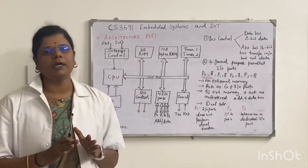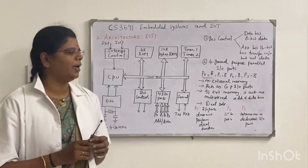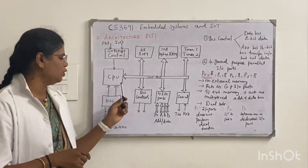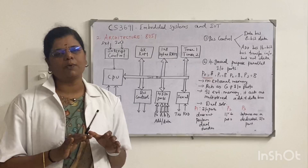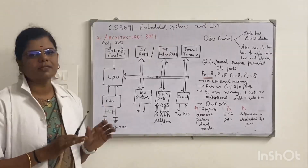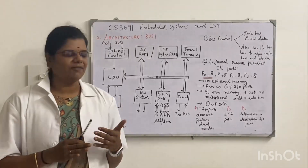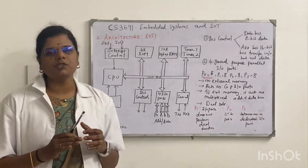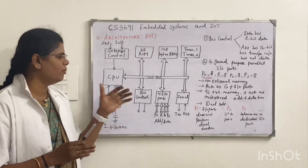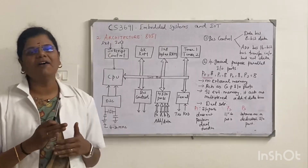The CPU, or central processing unit, is very important and plays a major role. We have the system bus, which is the internal bus. In the CPU we have the arithmetic logic unit, which performs all operations — addition, subtraction, multiplication — everything is performed in the ALU.